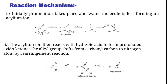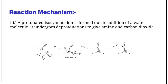Reaction Mechanism: Initially, protonation takes place and a water molecule is lost, forming an acylium ion. The acylium ion then reacts with hydrazoic acid to form a protonated acylazide. The alkyl group shifts from the carbonyl carbon to the nitrogen atom by a rearrangement reaction. A protonated isocyanate is formed, and upon addition of water and deprotonation, it gives amine and carbon dioxide.